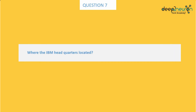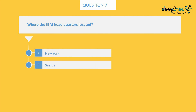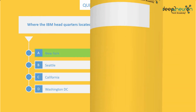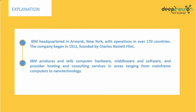Question number 7: Where are IBM headquarters located? Option A: New York. Option B: Seattle. Option C: California. Option D: Washington DC. The right answer is Option A, New York. IBM is headquartered in Armonk, New York, with operations in over 170 countries. The company began in 1911 and was founded by Charles Ranlett Flint. IBM produces and sells computer hardware, middleware, and software, and also provides hosting and consulting services in areas ranging from mainframe computers to nanotechnology.